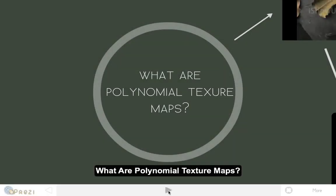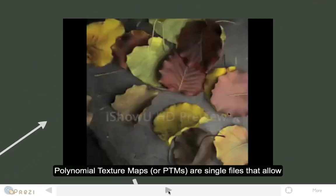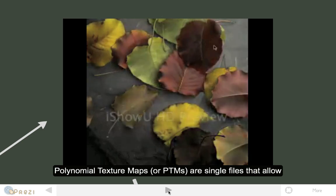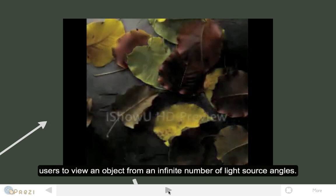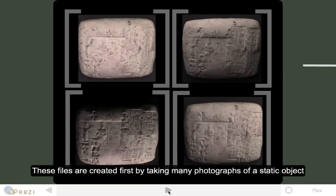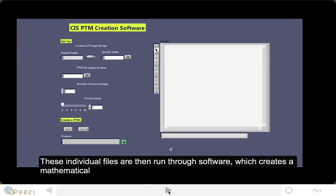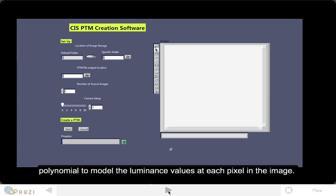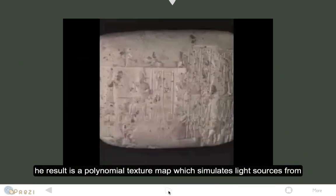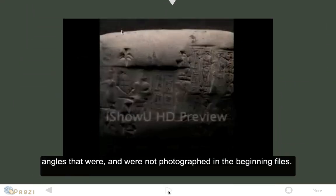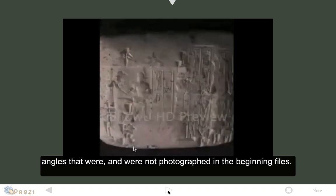Polynomial texture maps, or PTMs, are single files that allow users to view an object from an infinite number of light source angles. These files are created by taking many photographs of a static object from a fixed position using varying light angles. These individual files are then run through software, which creates a mathematical polynomial to model the luminance values at each pixel in the image. The result is a polynomial texture map, which simulates light sources from angles that were and were not photographed in the beginning files.